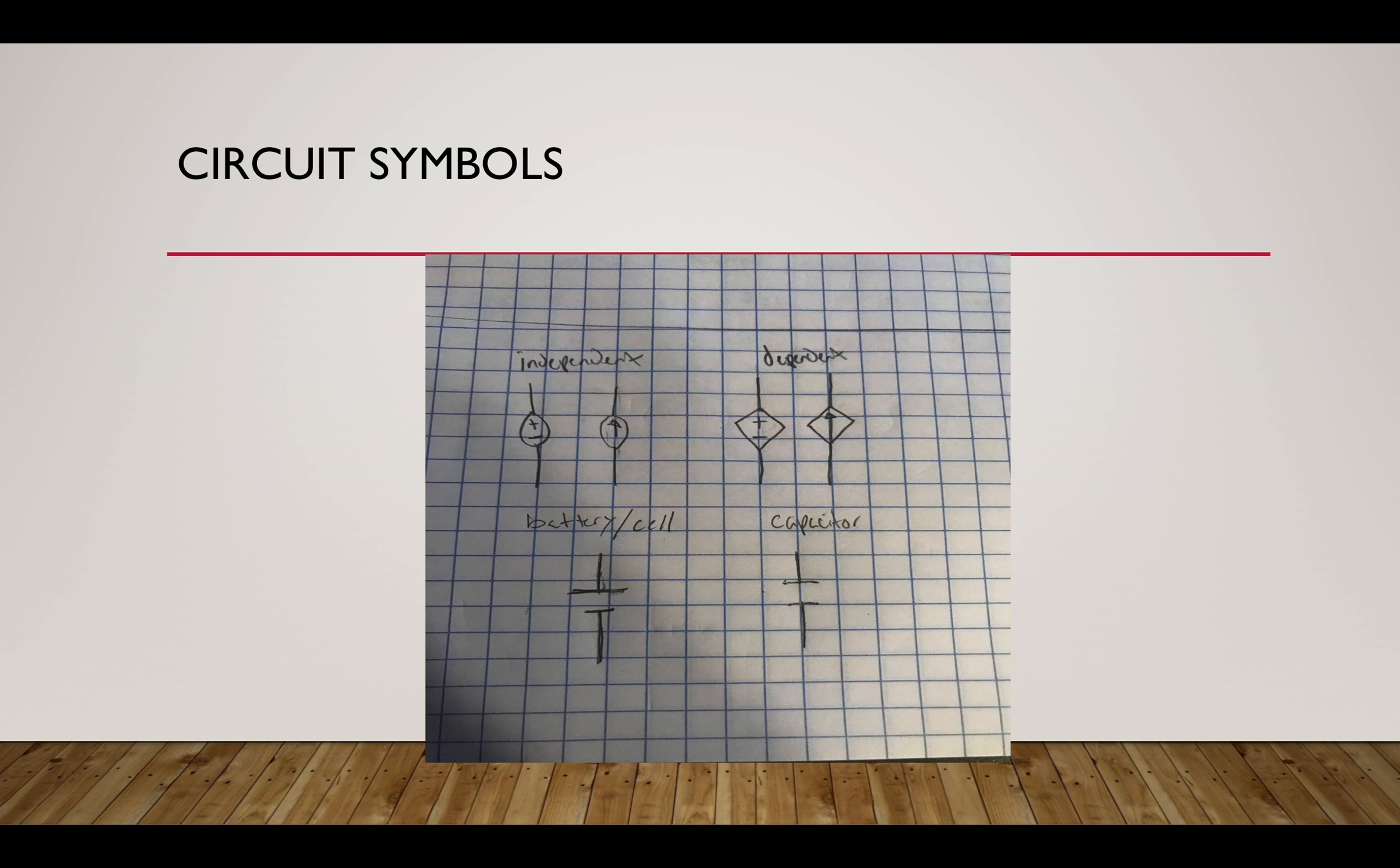Starting off with the circuit symbols as you can see right here, we have the independent sources which are these right here. Dependent sources which are kind of like a diamond.